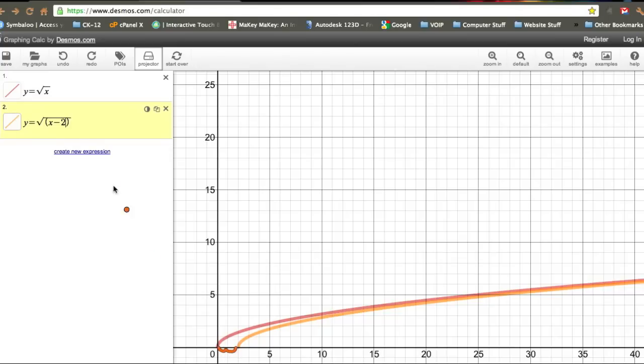I've moved my graph to the right two units, 1, 2. So if I subtract a value underneath the root, a negative value, a subtracted value moves the graph to the right.